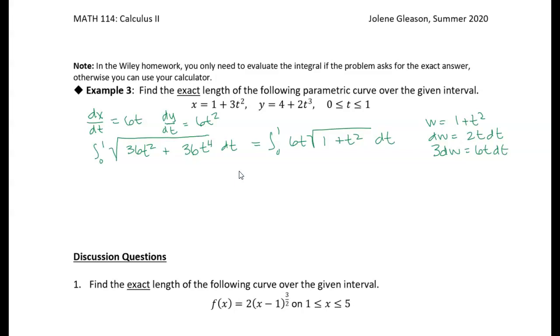Now, I can also transform the limits of integration, again, because it's a definite integral. So let's go ahead and do that, too. So when t equals 0, then w equals 1. And when t equals 1, then w equals 2. So I'm just plugging that into my equation for w and getting those values. So this is equivalent to the integral from 1 to 2 of the square root of w times 3dw.